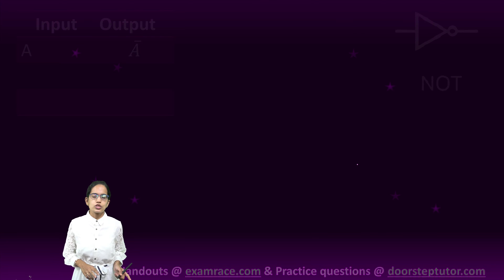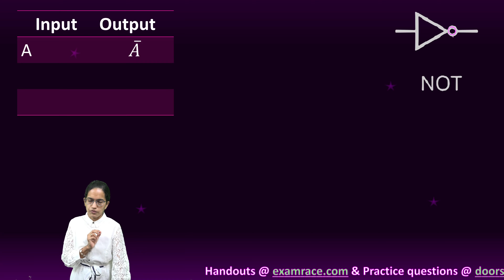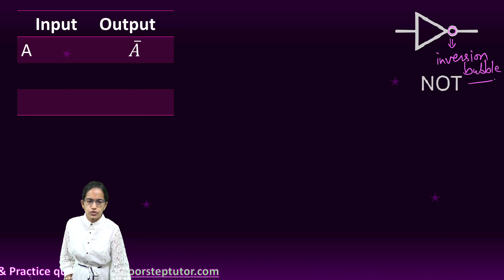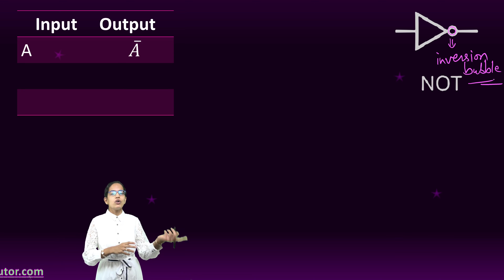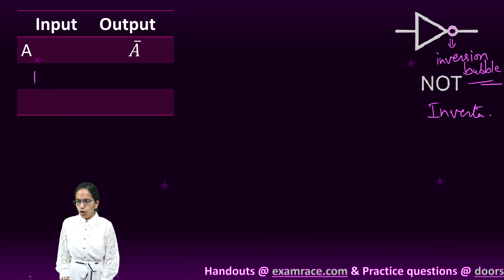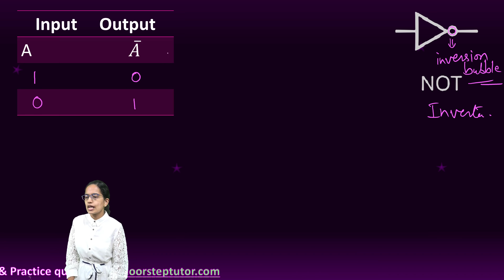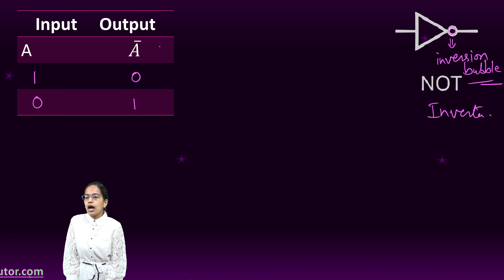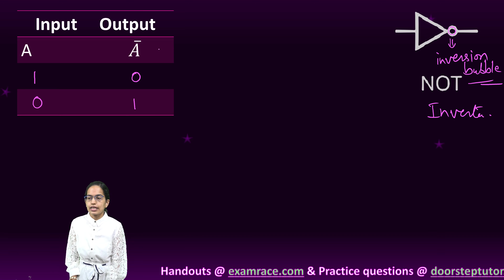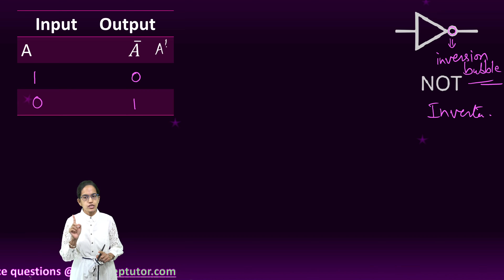The next, and closest to buffer, is NOT. I have the same diagrammatic representation but I simply put a circle in front of it. This circle is known as the inversion bubble, and its function is to invert the signal. So the NOT gate functions as an inverter — if input is 1, output is 0; if input is 0, output is 1. In Boolean algebra, if the input is A, the output is represented as A-bar or A-slash, both representing NOT.